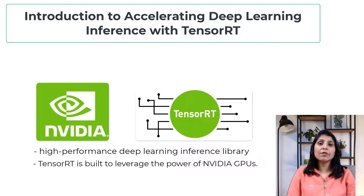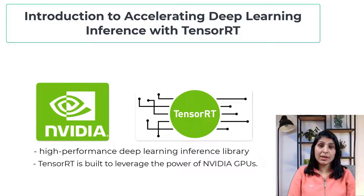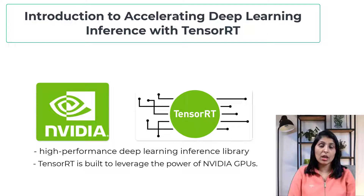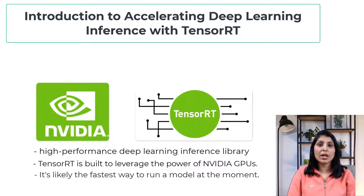By utilizing the parallel processing capability of GPUs, TensorRT can achieve significant speed-ups in inference time. In many real-time services and embedded applications, TensorRT can deliver approximately four to five times faster inference compared to traditional methods. According to the documentation, TensorRT can provide up to 40 times faster inference speed compared to CPU-only performance, making it one of the fastest ways to run a model currently available and ideal for applications where speed and efficiency are crucial.